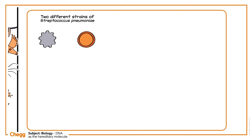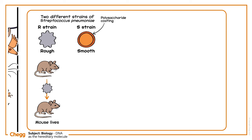Griffith knew there were two different strains of Streptococcus pneumoniae, the bacteria that causes pneumonia. There's the R strain, which has a rough appearance, and the S strain, which has a smoother outer coat. When Griffith injected a healthy mouse with the R strain, the mouse was fine — it did not catch pneumonia. He concluded the R strain is non-virulent.